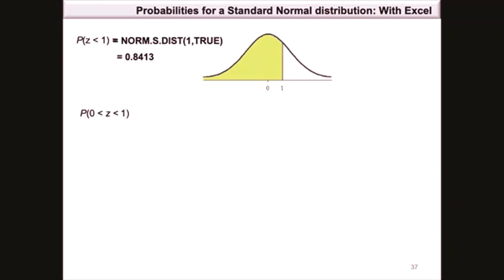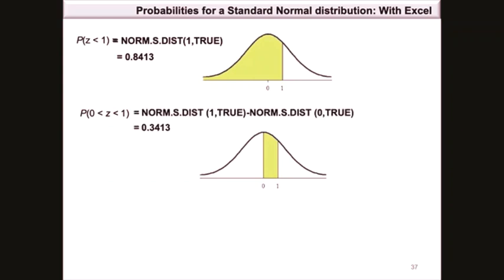The probability that z is between 0 and 1 is the shaded area between z = 0 and z = 1. Using norm.s.dist, this equals norm.s.dist(1, TRUE) minus norm.s.dist(0, TRUE) — the probability of z less than 1 minus the probability of z less than 0 — giving 0.3413.